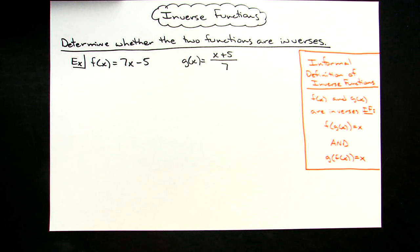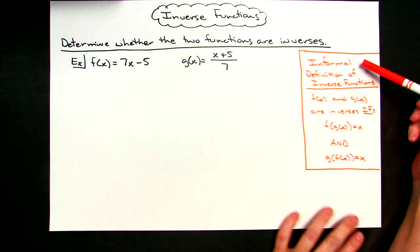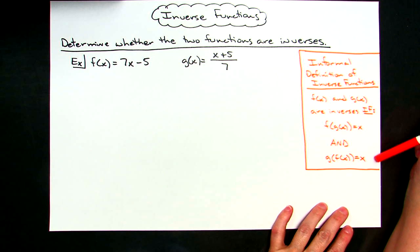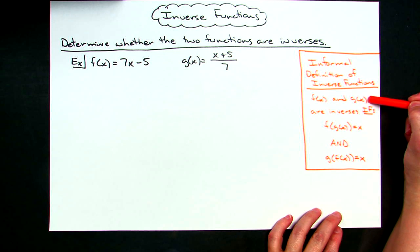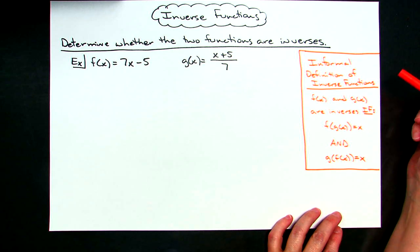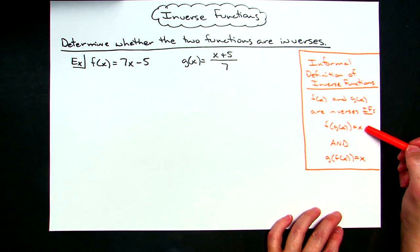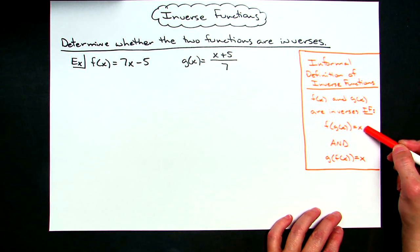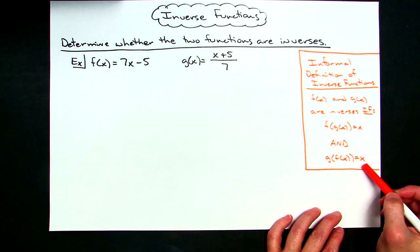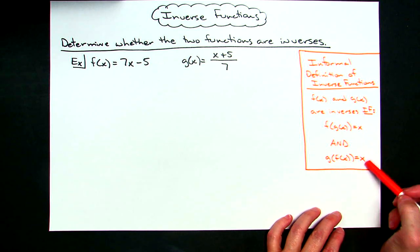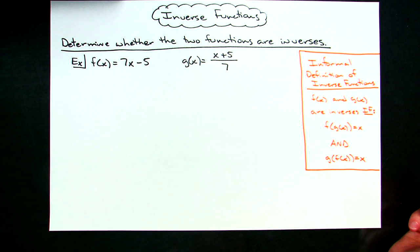Today we're going to take a look at some inverse functions and learn how to determine whether two functions are inverses. I have an informal definition: if I've got two functions, say f(x) and g(x), I can determine whether they are inverses by taking f of g of x, simplifying down to x, and also taking g of f of x and simplifying down to x. If I can do both, then I know I have two inverse functions.